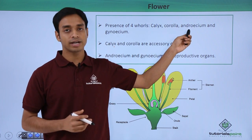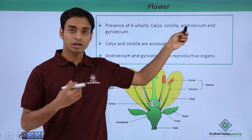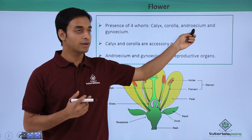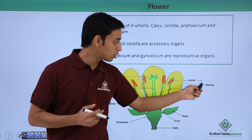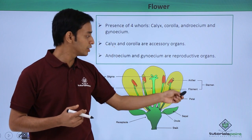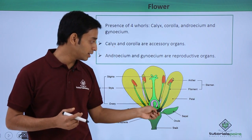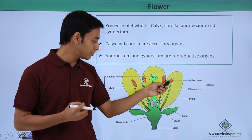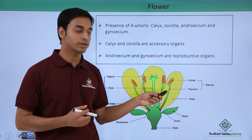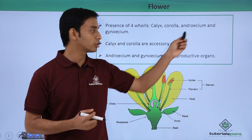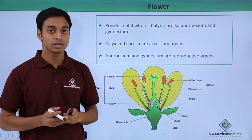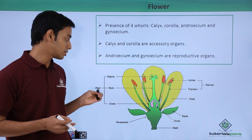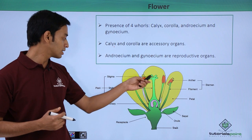The androecium is the male reproductive organ of a flower. It consists of the stamens, which have two parts: the anther and the filament. The anther is the colored portion that contains the pollen grains, and the filament is the stalk that supports it. The female reproductive structure is the gynoecium, which is the pistil, and it has three parts: the stigma, the style, and the ovary.